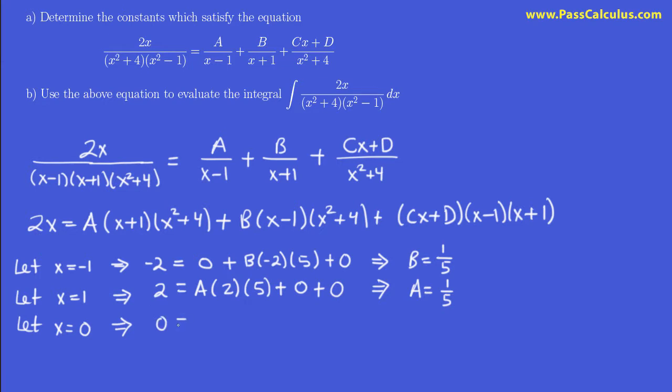So when I put in 0, 2 times 0 is 0. a is 1 fifth. 0 plus 1 is 1. 0 squared plus 4 is 4. Plus the value of b, which is 1 fifth. 0 minus 1 is minus 1. 0 squared plus 4 is 4.